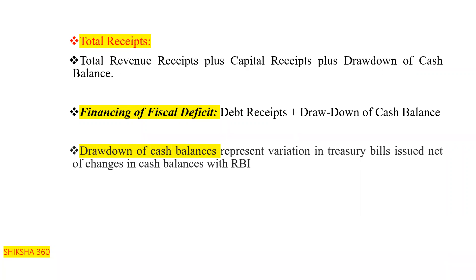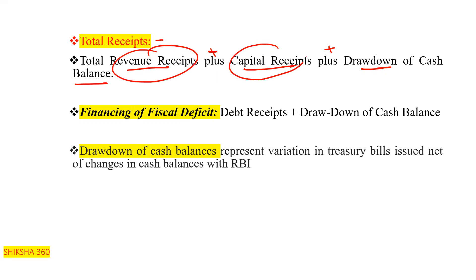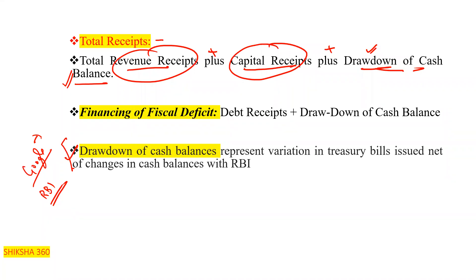Total receipts = revenue receipts plus capital receipts plus drawdown of cash balances. Drawdown of cash balances represents variation in treasury bills issued, net of changes in cash balances with the RBI. For example, if the government issues a treasury bill of ₹1000 and the value changes to ₹800, the government must make up the ₹200 difference from its own funds.